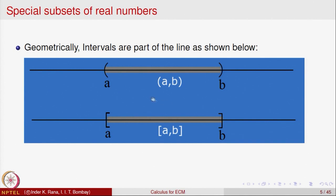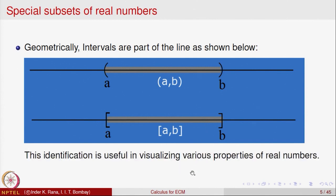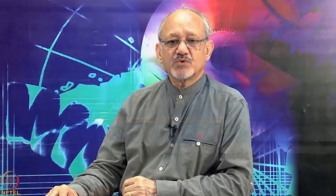Geometrically, the open interval (a, b) can be represented with round brackets at a and b, with all the points in between — that represents the interval (a, b). If we put square brackets at both ends, then a and b are included, and that is the geometric representation of the closed interval [a, b]. All points on the segment excluding a and b represent the open interval, while all points including a and b represent the closed interval. These representations will be useful in proving some properties of real numbers and guiding us to write analytical proofs.